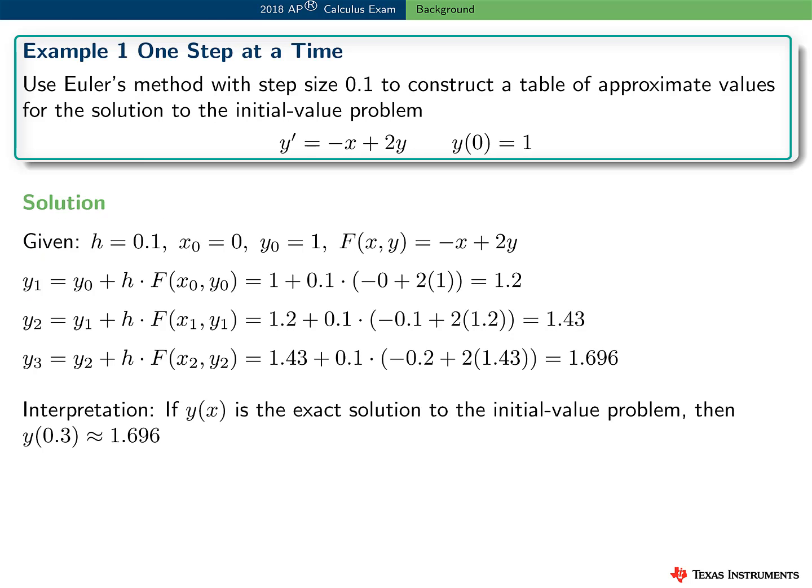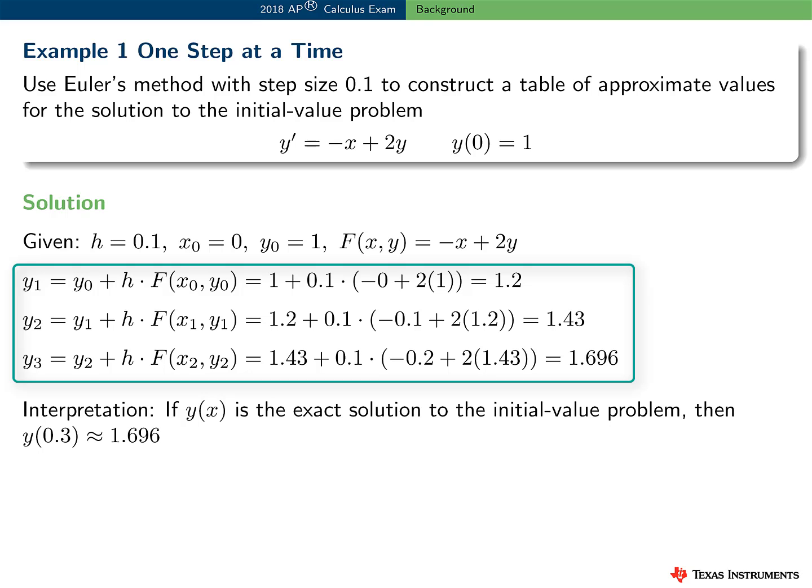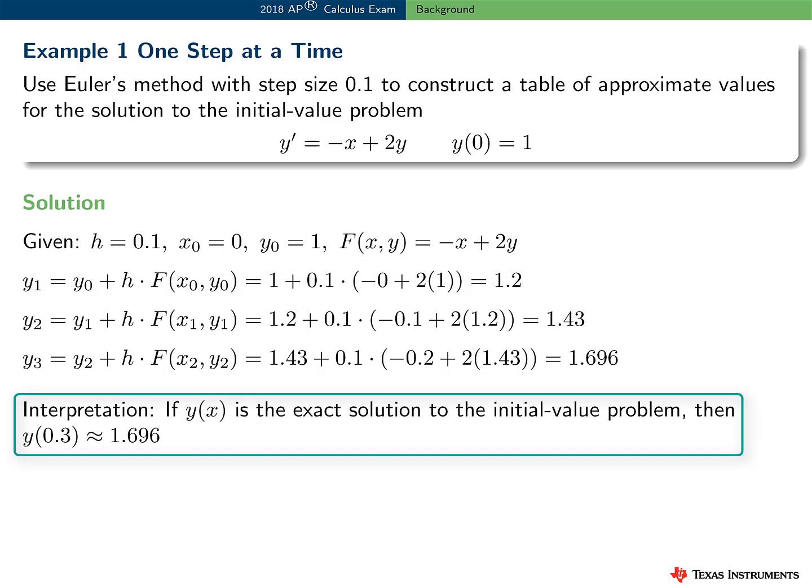In this example, let's use Euler's method to construct a table of approximate values for the solution to this initial value problem. The step size here is 0.1. x sub 0 is equal to 0 and y sub 0 is equal to 1, and the slope at any point is minus x plus 2y. So I applied Euler's method with three steps. And here's an interpretation of my results. If y of x is the exact solution to the initial value problem, then y of 0.3 is approximately 1.696.